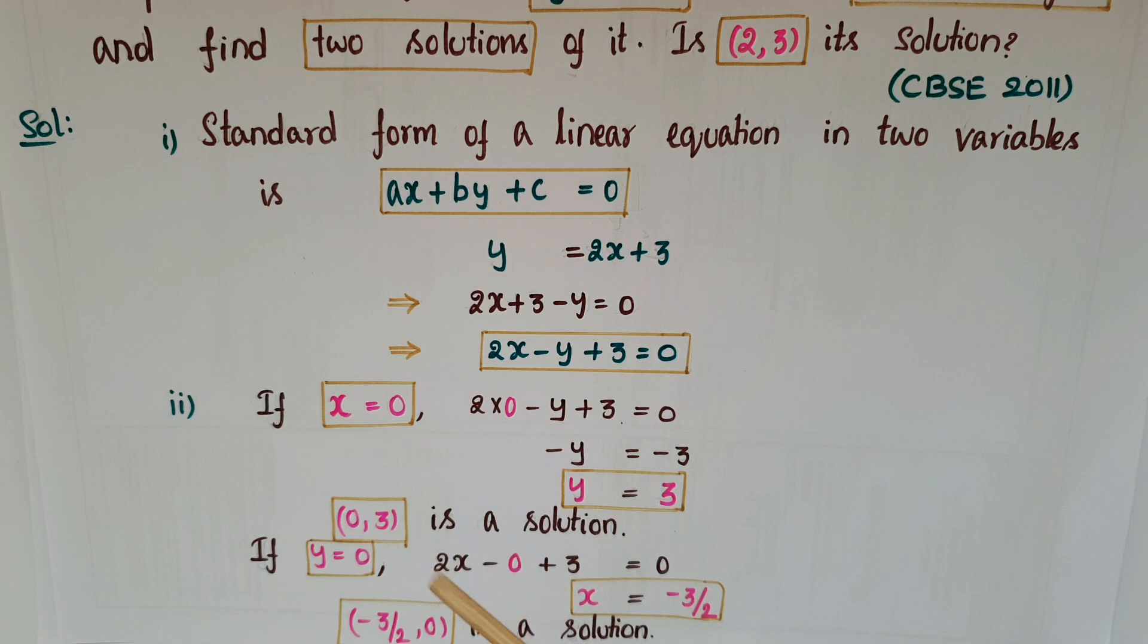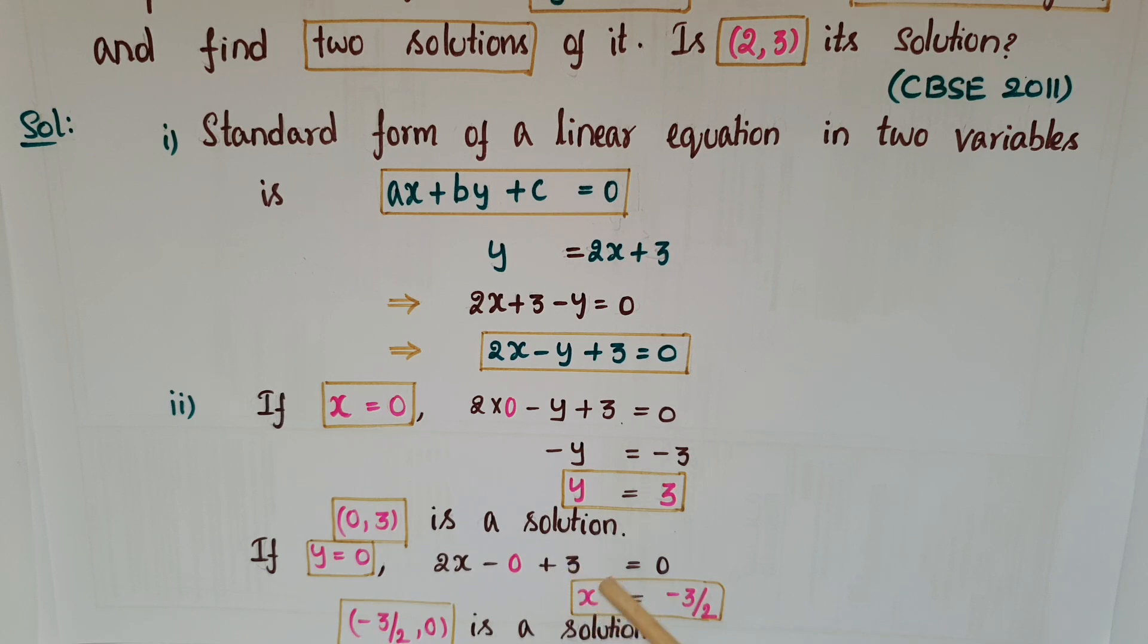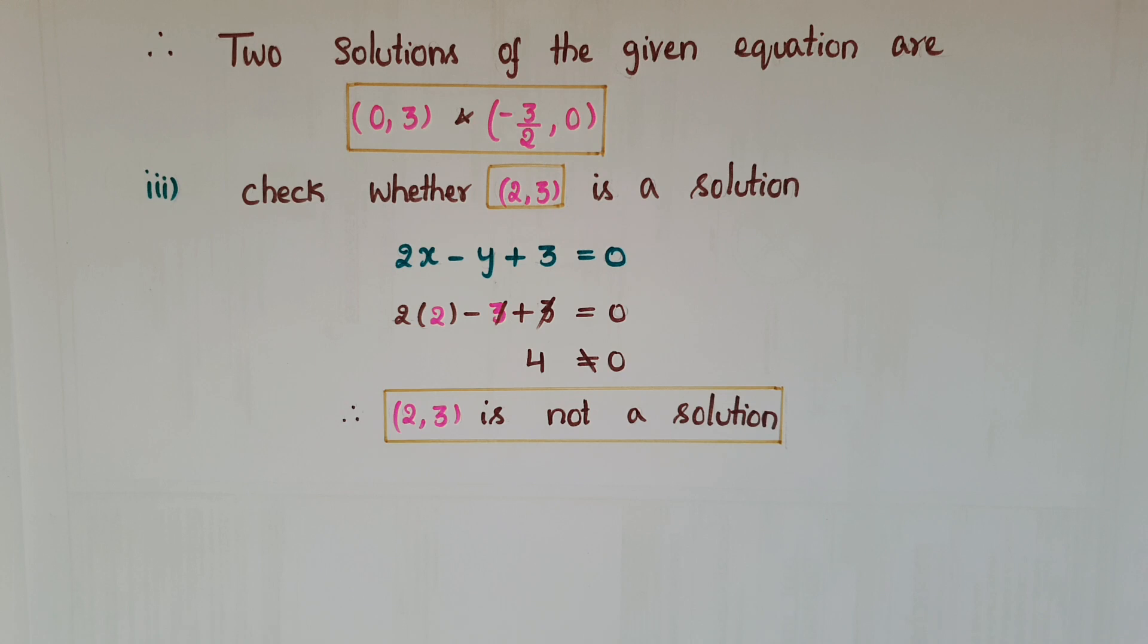Next, assume y equals 0, then substitute y as 0 in this equation. Then 2x minus 0 plus 3 equals 0, then x equals minus 3 by 2. So (-3/2, 0) is another solution. The two solutions of the given equation are (0,3) and (-3/2, 0).